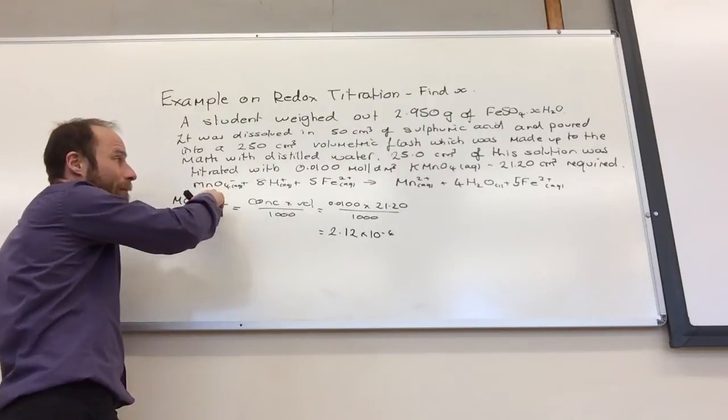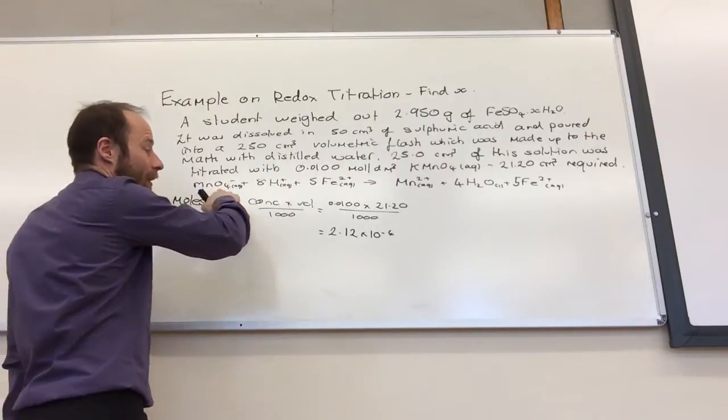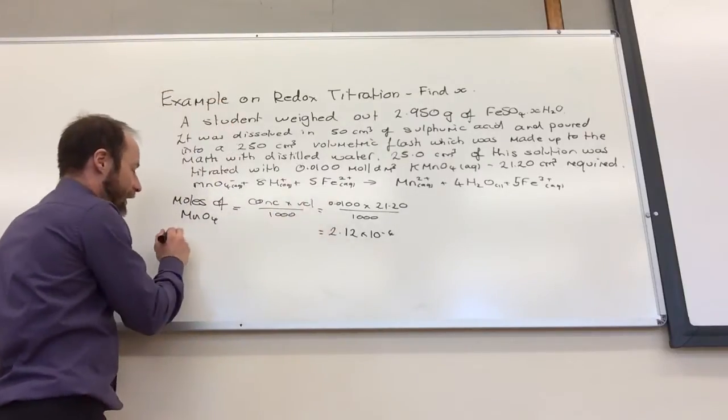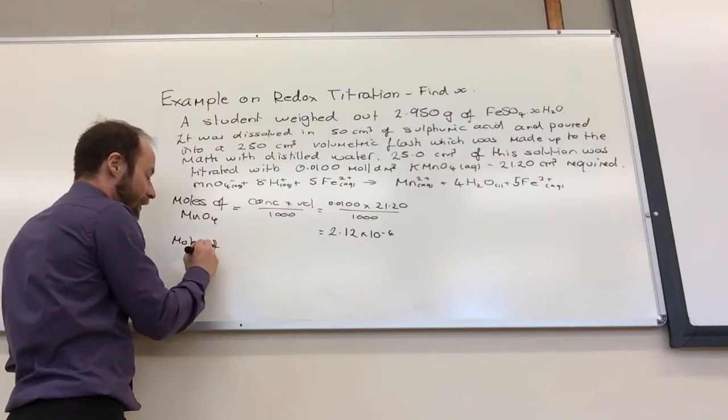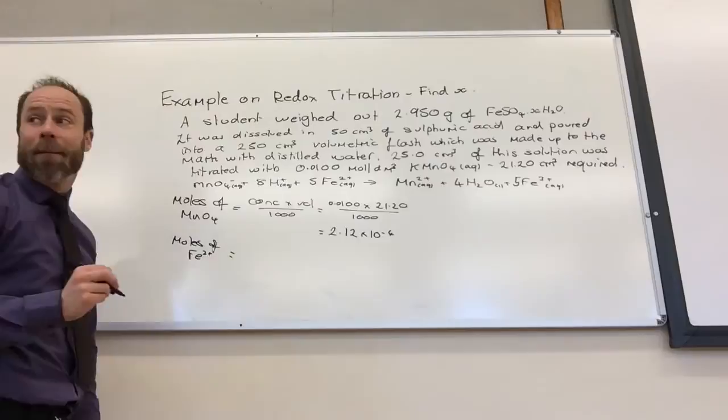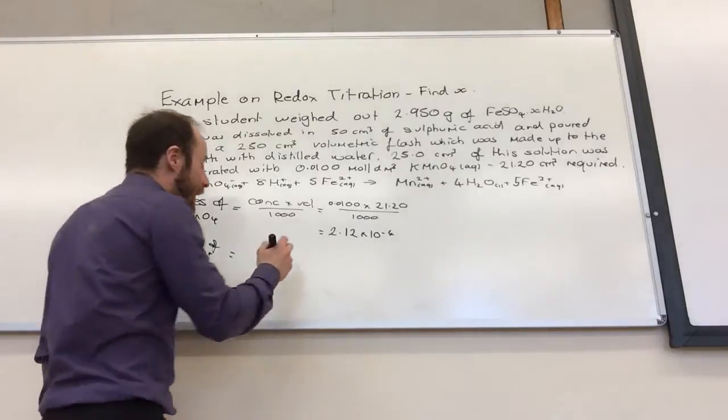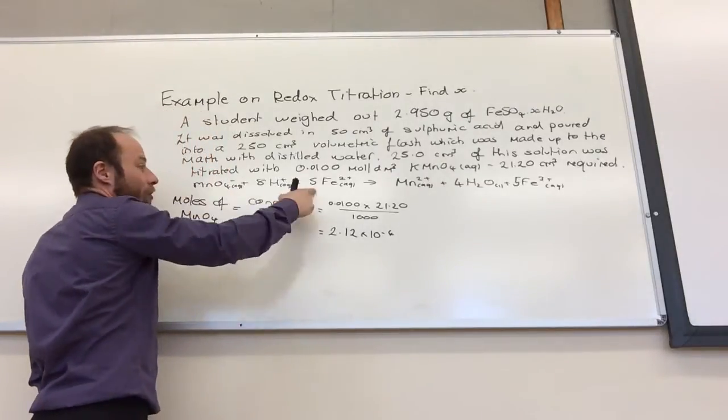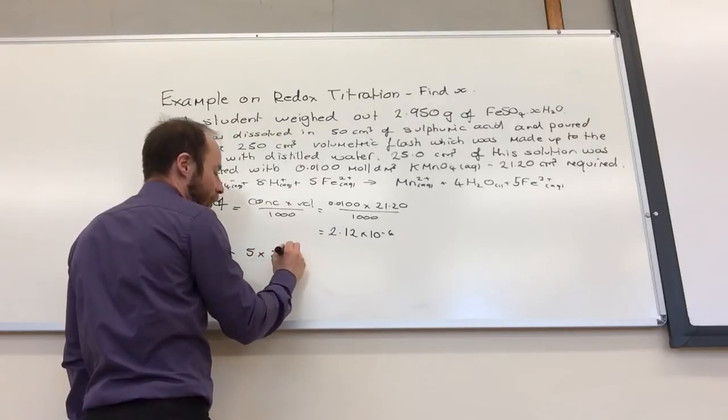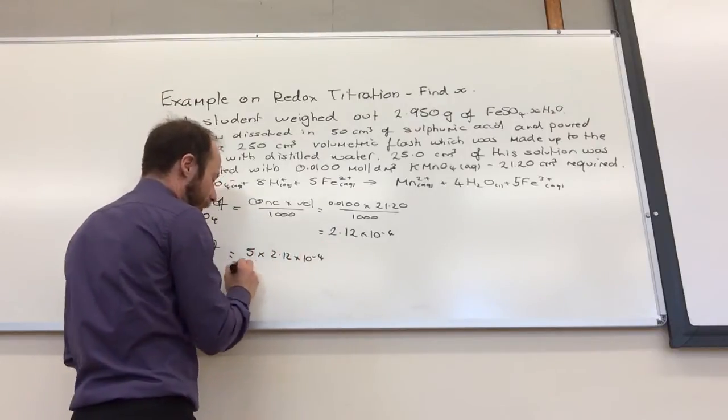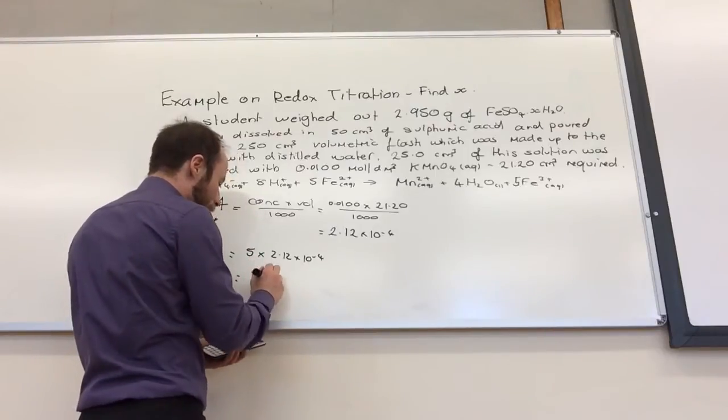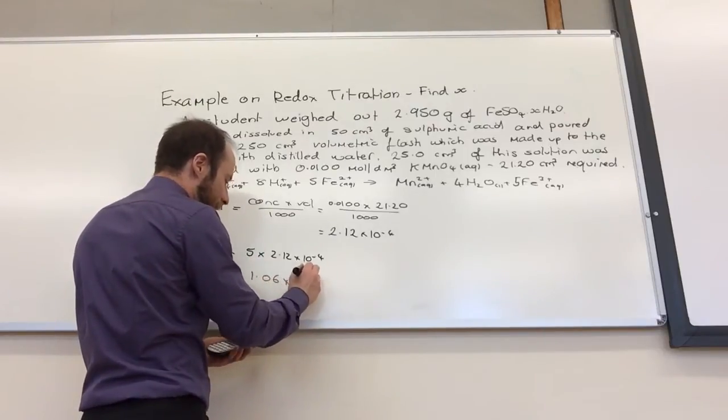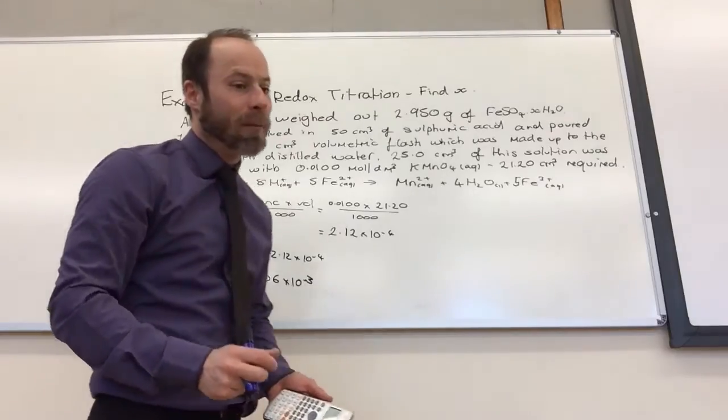I then now need to relate it to... Well, I found the moles of that. I need to relate it to the moles of Fe²⁺. How am I going to do that? Yeah, I need to times it by 5. One of those should be actually 5 of those. So, it's 5 times 2.12 times 10 to the minus 4, which gives me 1.06 times 10 to the minus 3 moles.